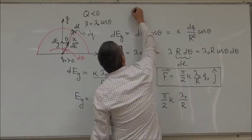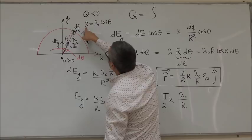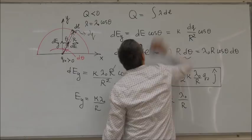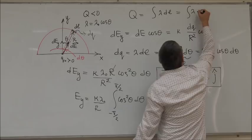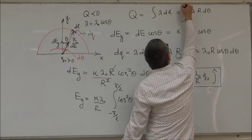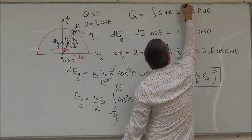What you can do is this, you know that the total charge Q is equal to integral of lambda DL, and then you convert lambda DL into lambda R d theta, and you integrate from minus pi over 2 to pi over 2, and you get an expression in terms of lambda 0, and then you express lambda 0 in terms of Q, and substitute it here. But this is something you can do yourself.